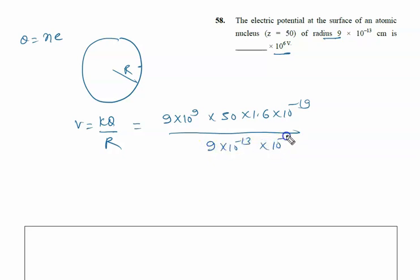Converting to meters with 10 to the power minus 2, we solve and get 8 into 10 to the power 6 volts. In the fill in the blanks, we will put 8. The answer is 8.